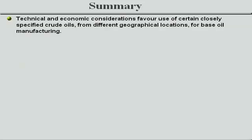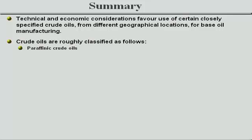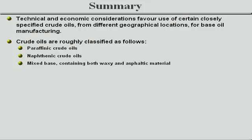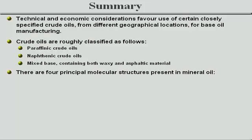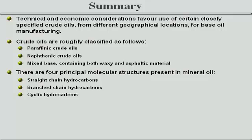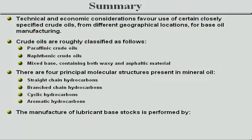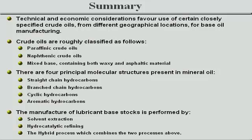To summarise the main topics of this lesson: technical and economic considerations favour use of certain closely specified crude oils from different geographical locations for base oil manufacturing. Crude oils are roughly classified as paraffinic, naphthenic, and mixed base — containing both waxy and asphaltic material. There are four principal molecular structures present in mineral oil: straight-chain hydrocarbons, branched-chain hydrocarbons, cyclic hydrocarbons, and aromatic hydrocarbons. The manufacture of lubricant-based stocks is performed by solvent extraction, hydro-catalytic refining, or the hybrid process which combines the two.